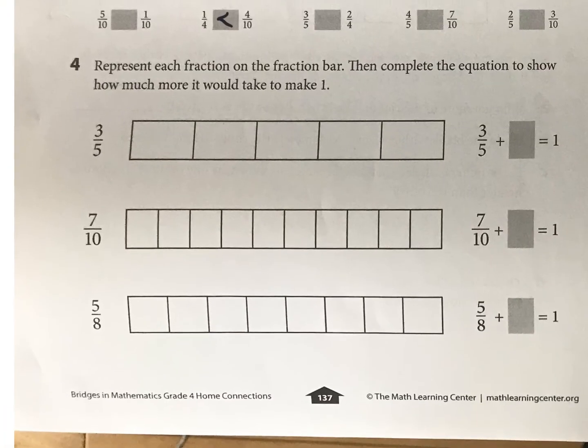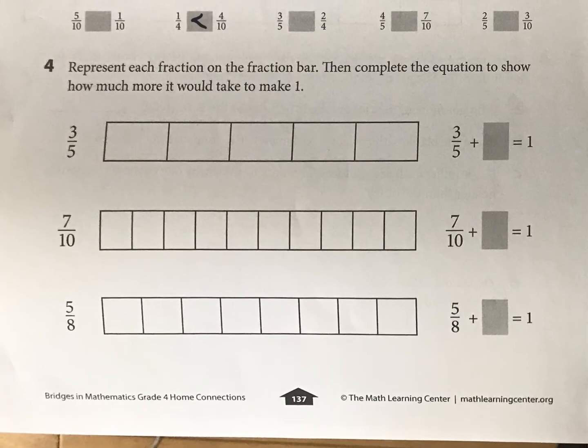Down here, we're filling in fractions and figuring out what else do we need. So three fifths to fill that in, it's going to look something like this. And then how much more do we need to get to one? Well, what's left? This is left. So we need two fifths to get to one. And the other two should be okay then.